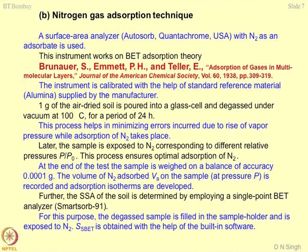The second method is nitrogen gas adsorption technique. This is where you use a surface area analyzer known as autosorb, which is a Quantachrome make, where nitrogen is used as an adsorbate. This instrument works on the principle of BET.